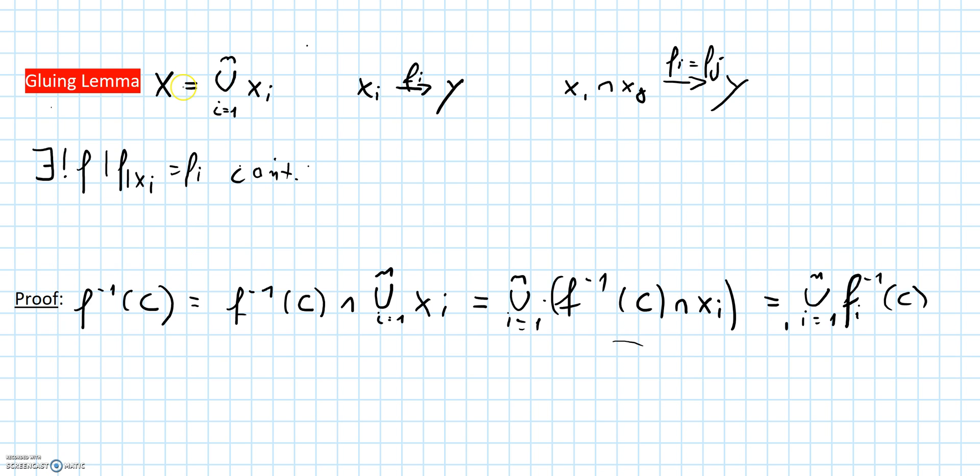Assume that you have a topological space X which is a union of finitely many closed subsets xi, and assume that you have continuous maps fi which maps the xi to a topological space Y.